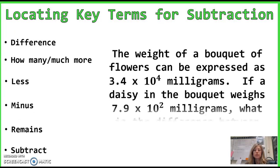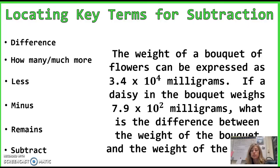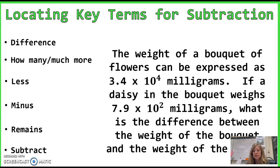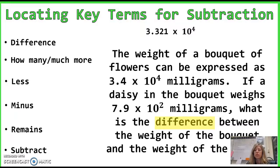Another subtraction problem using key terms: The weight of a bouquet of flowers can be expressed as 3.4 times 10 to the 4th milligrams. If a daisy in the bouquet weighs 7.9 times 10 to the 2nd milligrams, what's the difference between the weight of the bouquet and the weight of the daisy? Highlight the key word: difference means subtract. Go ahead and subtract on your calculator and pause the video before I show you my answer. The answer is 3.321 times 10 to the 4th.